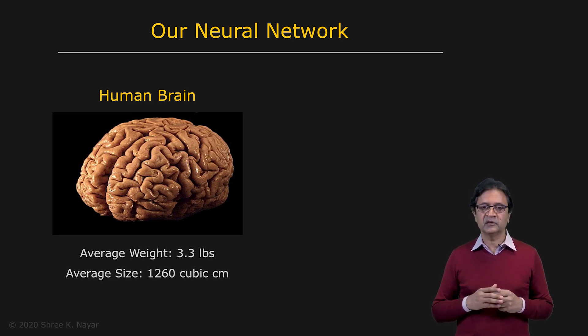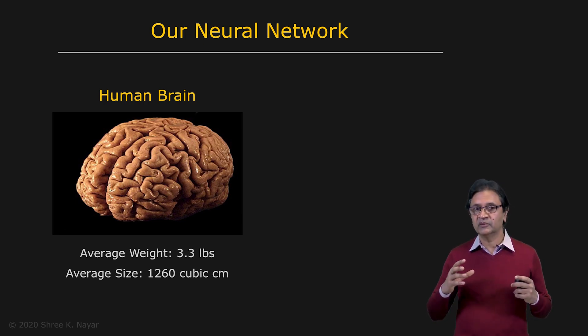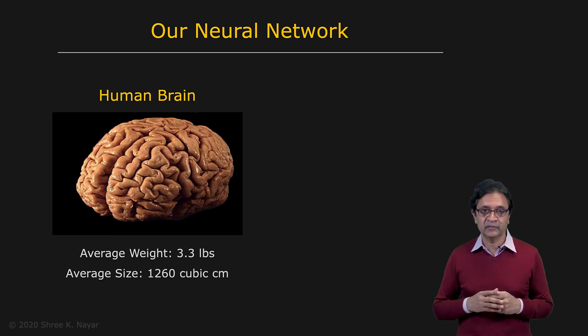Needless to say, the brain is remarkable. It has an average weight of about three point three pounds and average size of about twelve hundred cubic centimeters. And what's remarkable is that although it accounts for only about two percent of the weight of a person, it consumes about 20 percent of the energy. And why is that the case? Because there's a lot of visual processing and other types of signal processing that's happening in the brain all the time. And so this energy is being used to process and transmit all kinds of signals, information.